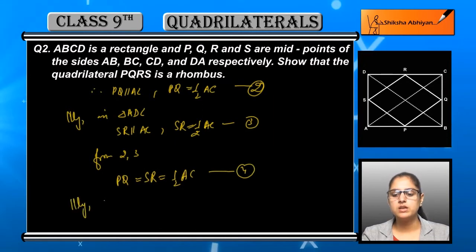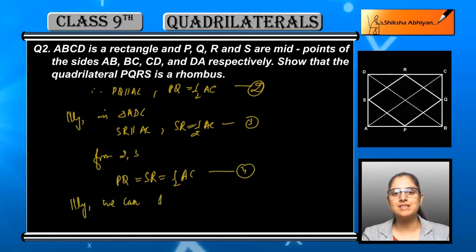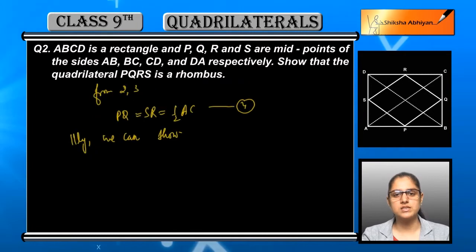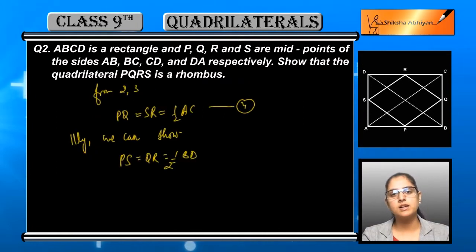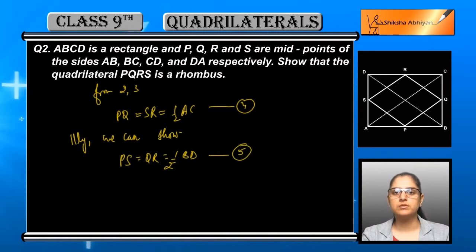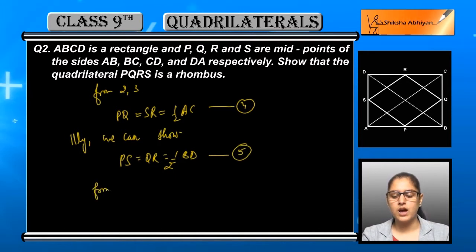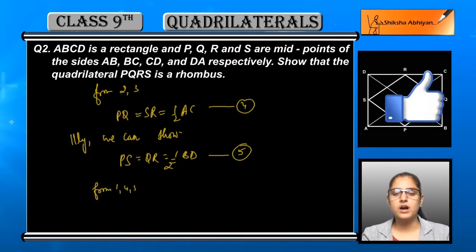Using equations two and three together, AC is common in both. Eliminating AC, we get PQ is equal to SR, which is equal to half of AC. This is equation number four.